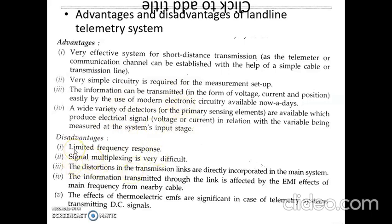The disadvantages of the landline telemetry system are: limited frequency response; signal multiplexing is very difficult; distortion in the transmission links is directly incorporated into the main system; the information transmitted through the link is affected by EMI, that is electromagnetic interference effects of mains frequency from nearby cables; and the effects of thermoelectric EMFs are significant in telemetry systems transmitting DC signals.